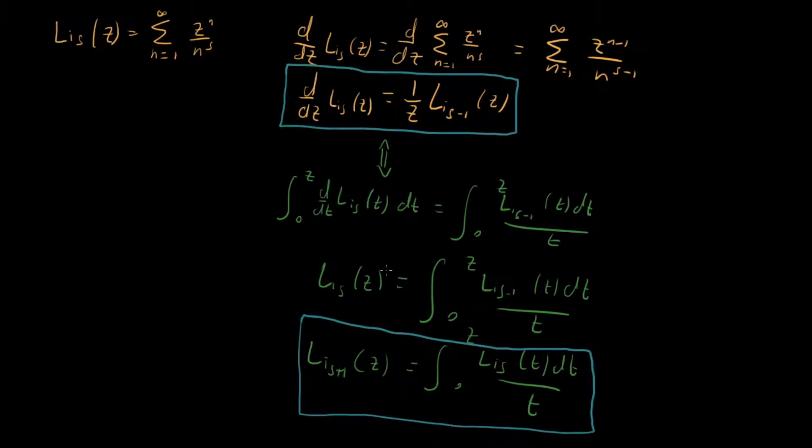And so these two properties right here are going to be really important when we study the polylogarithm for a variety of reasons. First, because it's going to allow us to jump between different forms of the polylogarithm.